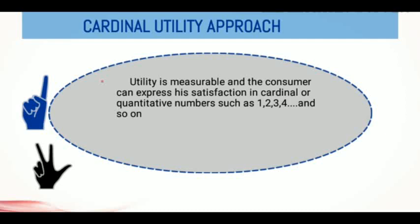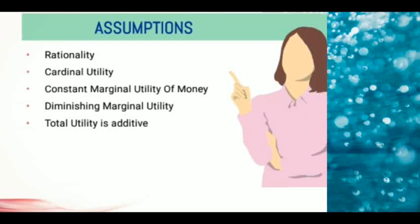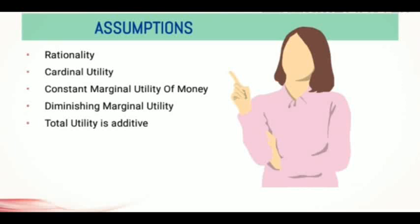For instance, if a consumer is willing to pay 20 rupees to consume an apple, then the utility he gets from the apple is 20 units. This method is backed by some assumptions. The first is rationality — the consumer is rational and aims at maximizing utility subject to the constraint of his given income. The second is cardinal utility — the utility of each commodity is measurable and is a cardinal concept. The most convenient measure is money; utility is measured by the monetary units the consumer is prepared to pay for another unit of the commodity.